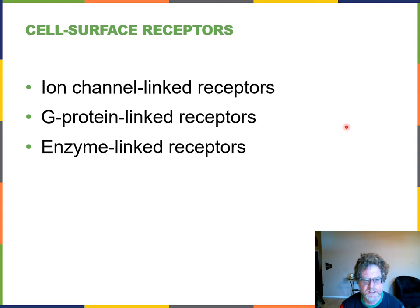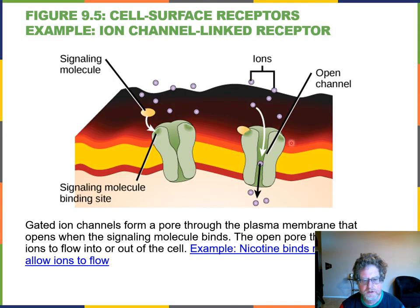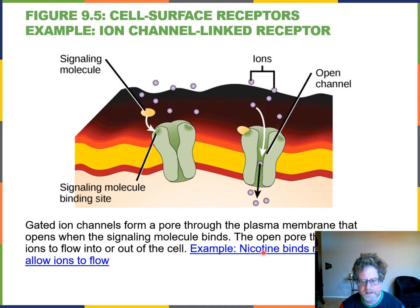Some receptors on the cell surface and plasma membrane include ion channels, G proteins, and enzyme-linked receptors. With ion channels, when the signaling molecule — the ligand — binds, it opens the channel and ions can flow in and out. An example of something that opens an ion channel is nicotine: the nicotine binds to an ion channel and opens it up.